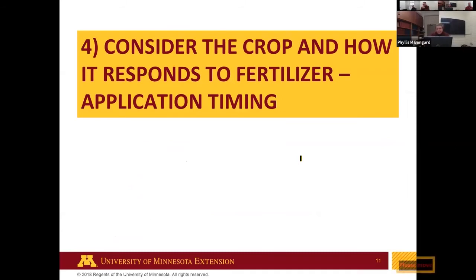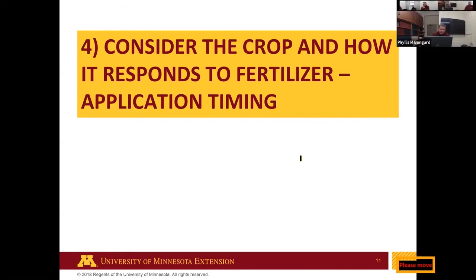The fourth point is timing. There's more emphasis on fertilizing ahead of every crop in a rotation. Looking at 10-year studies comparing different options — all before soybean, all before corn in a two-year rotation, a split application of two-thirds before corn and one-third before beans, and a starter application of five gallons of 10-34-0 before corn with the rest broadcast before beans. Soybean doesn't care about timing as much, but on the corn side there's a four to six bushel per acre yield benefit when applying ahead of the corn at sites that showed a response.